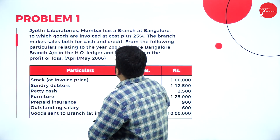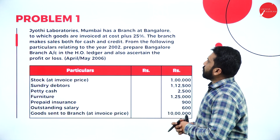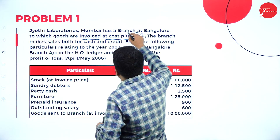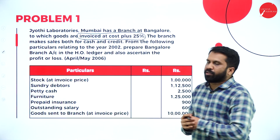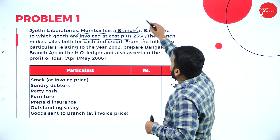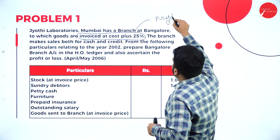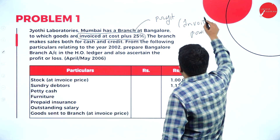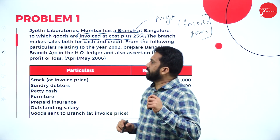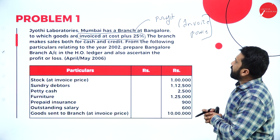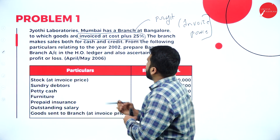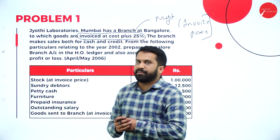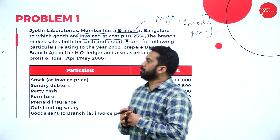Jyothi Laboratory Mumbai has a branch at Bangalore to which goods are invoiced at cost plus 25%. This is very important — cost plus 25% means they are issuing goods with profit, which is the invoice price. The branch makes sales both for cash and credit. For the following particulars relating to the year 2002, prepare the Bangalore branch account in the head office ledger.